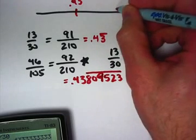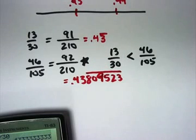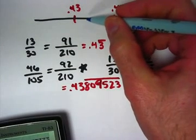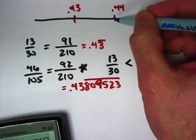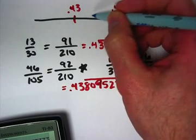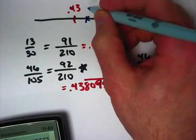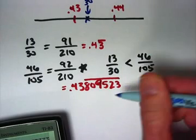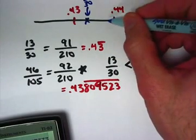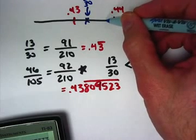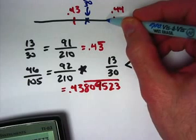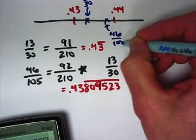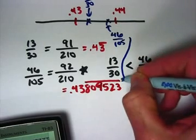So they are pretty close on the number line if 0.43 is there, and 0.44 is here. Then 0.43 with the 3 repeating is going to be one-third of the way from 0.43 to 0.44. And then this number, we just have to estimate 0.438 would be eight-tenths or four-fifths of the way from 0.43 to 0.44 right about here.